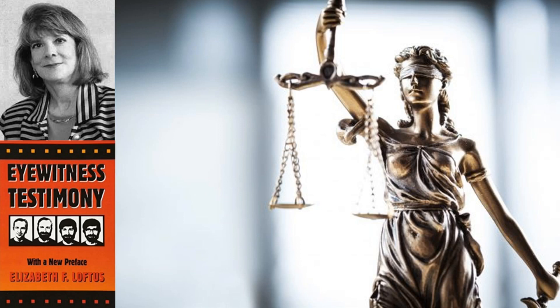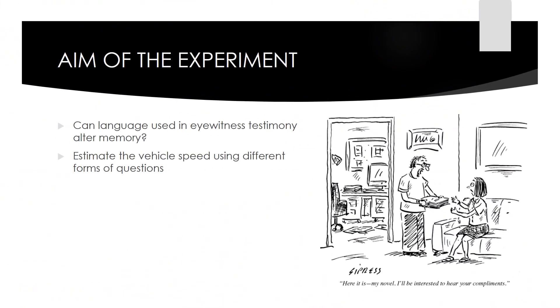The fact that eyewitness testimony can be unreliable and influenced by leading questions is illustrated by the classic psychology study by Loftus and Palmer: the reconstruction of automobile destruction. The aim of the experiment was to test the hypothesis that language used in eyewitness testimony can alter memory. They aimed to show that leading questions could distort eyewitness testimony accounts, as the account would become distorted by cues provided in questions. To test this, Loftus and Palmer (1974) asked people to estimate the speed of motor vehicles using different forms of questions.